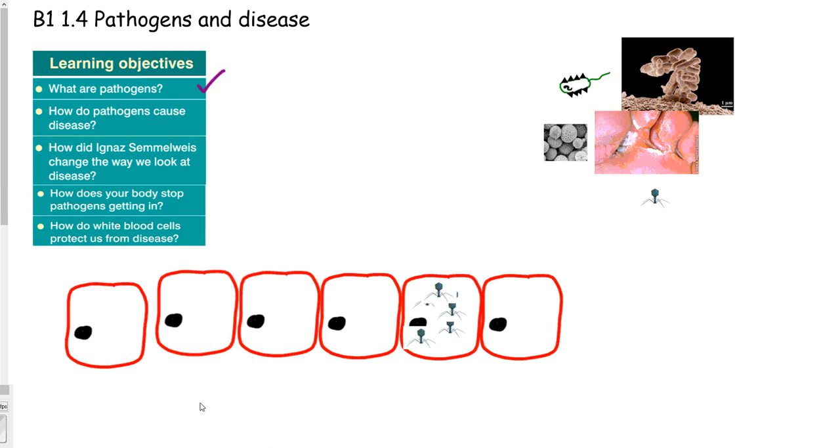Viruses cause cell damage, so much so that the cell may actually burst. When that bursts, all of the viruses which have been reproduced in that cell are then released into the body again to go on and infect the surrounding cells.